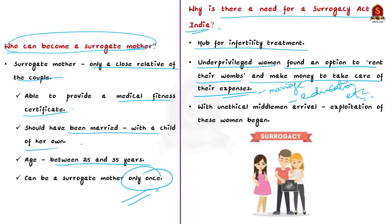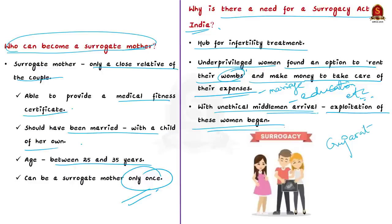Once the availability of such services became known, demand picked up. The exploitation of these women began when unethical middlemen infiltrated the scene. For example, in 2008 a Japanese couple began the process with a surrogate in Gujarat, but split before the child was born and refused to take the child. In 2012, an Australian couple commissioned a surrogate and arbitrarily chose only one of the twins born. Because of these reasons, the government decided proper regulation was needed.